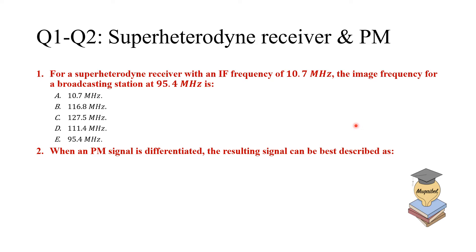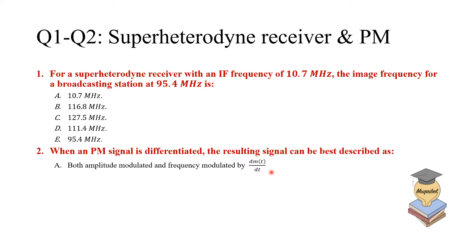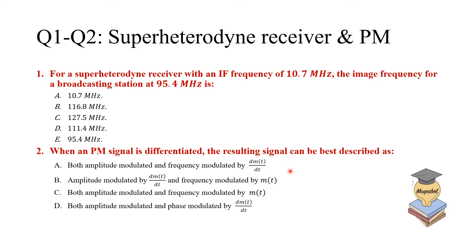Question two: when a phase modulated (PM) signal is differentiated, the resulting signal can best be described as which one of the following — both amplitude modulated and frequency modulated, dM/dt, or other options B, C, D, or E? Pause the video for two minutes and pick your answer: A, B, C, D, or E.